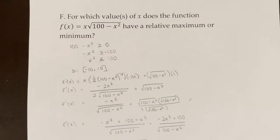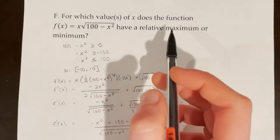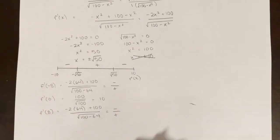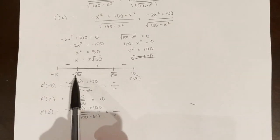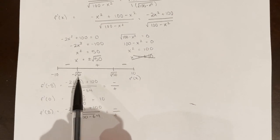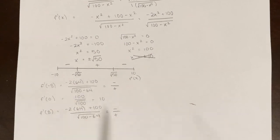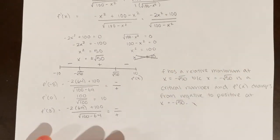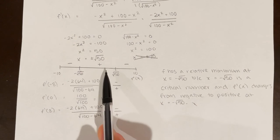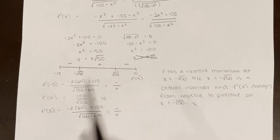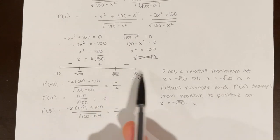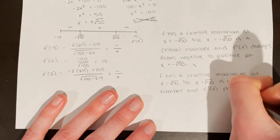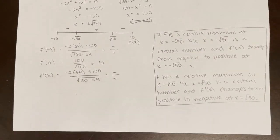Now I just need to interpret. The question asks for which values of x the function has a relative maximum or minimum. f has a relative minimum at x equals negative rad 50 because x equals negative rad 50 is a critical number and f prime of x changes from negative to positive there. f has a relative maximum at x equals rad 50 because x equals rad 50 is a critical number and f prime of x changes from positive to negative at x equals rad 50.